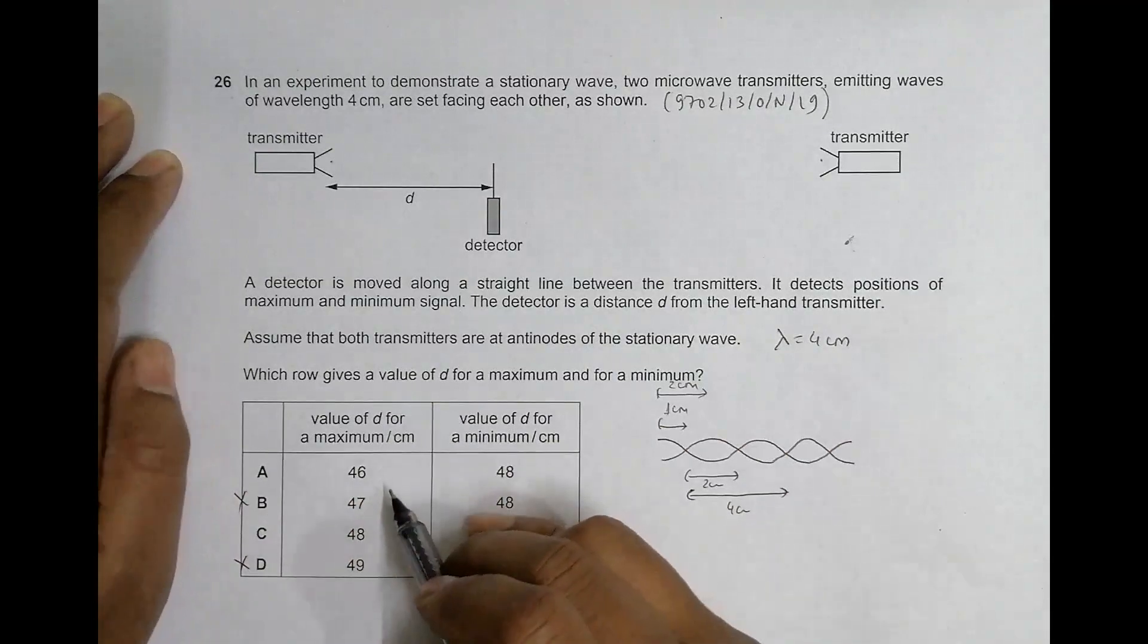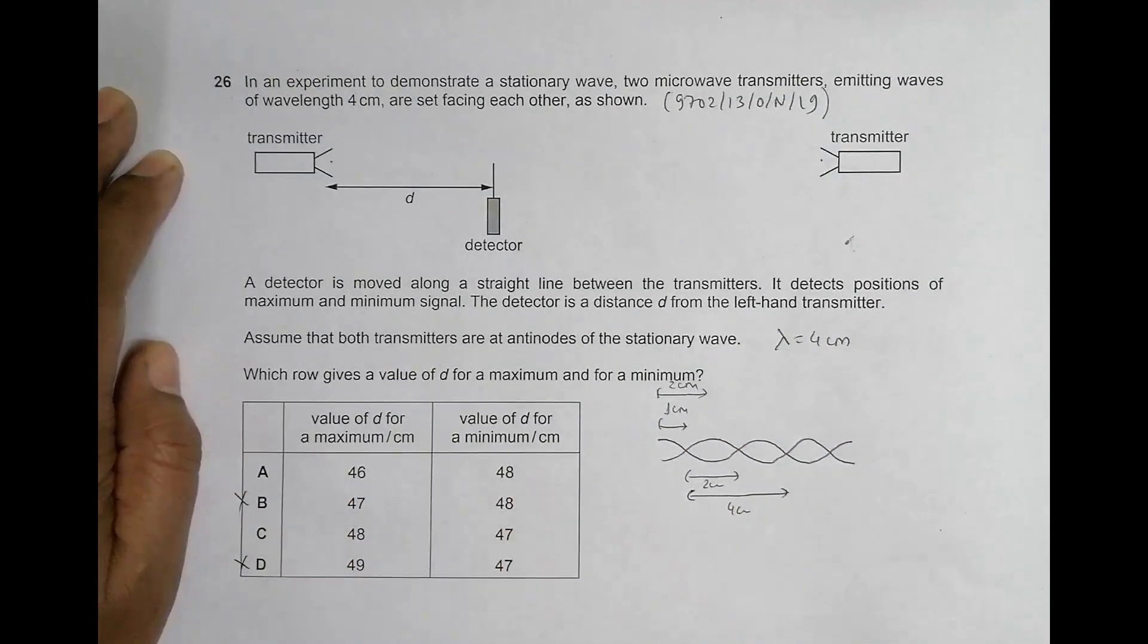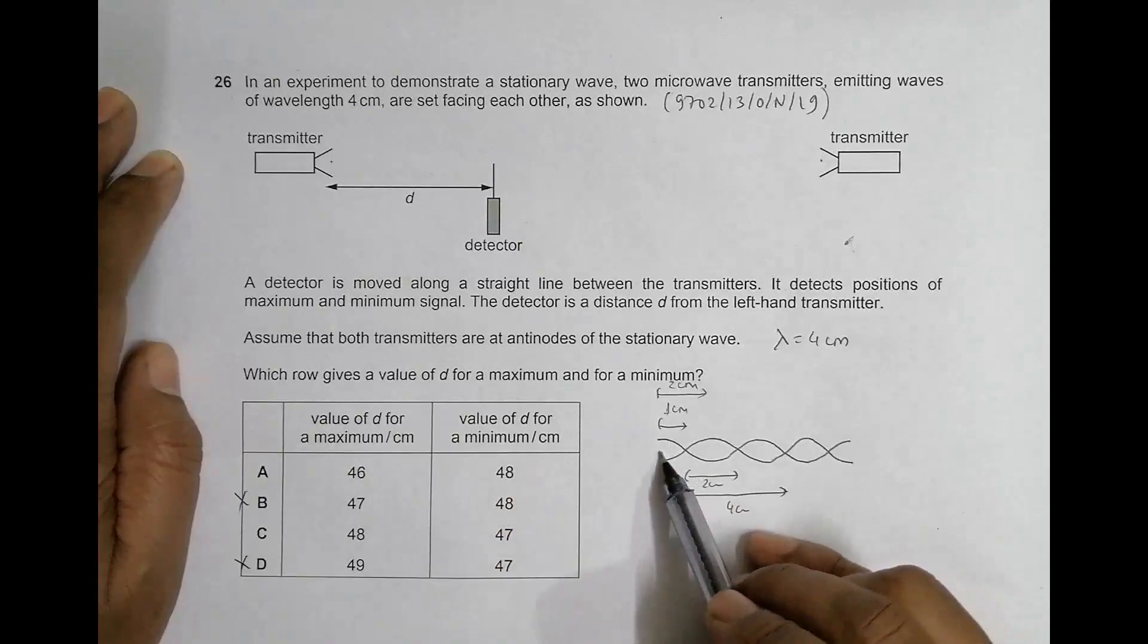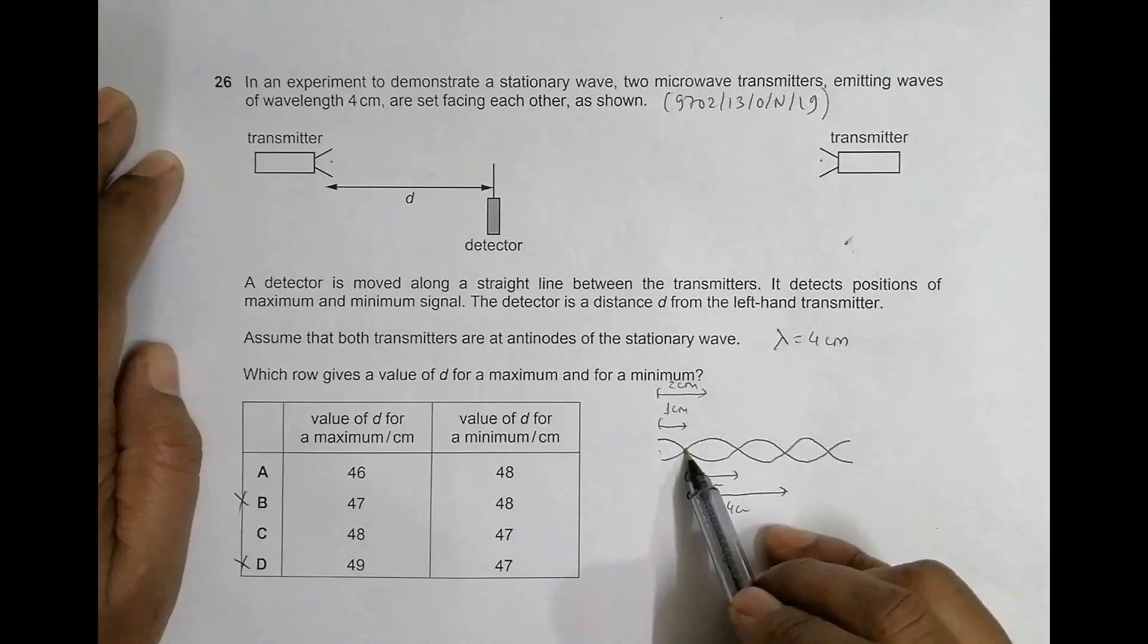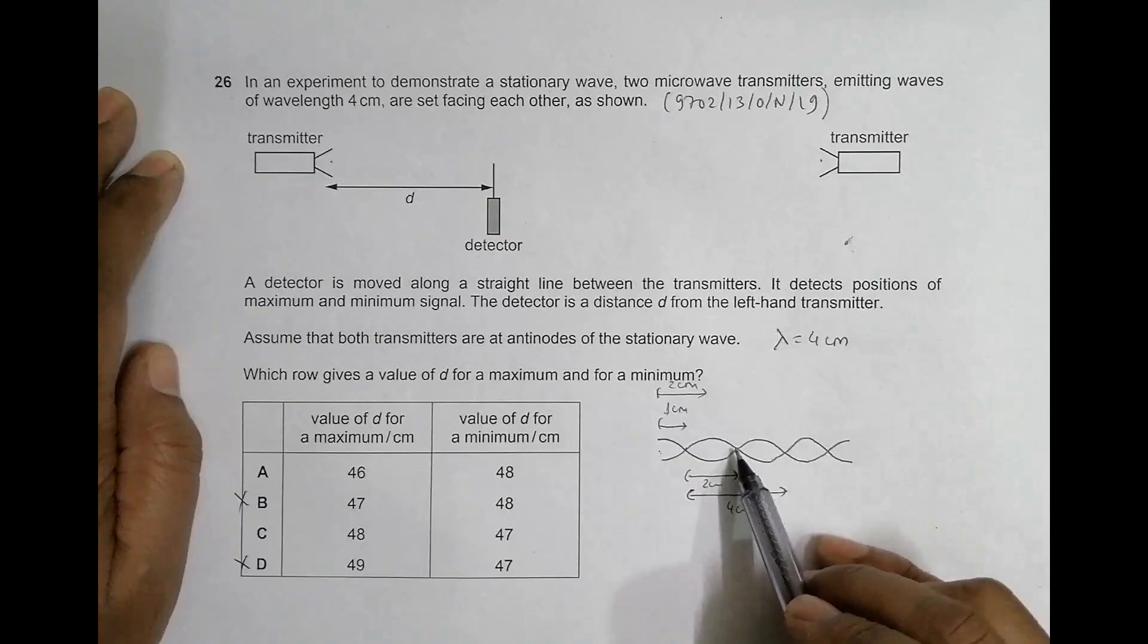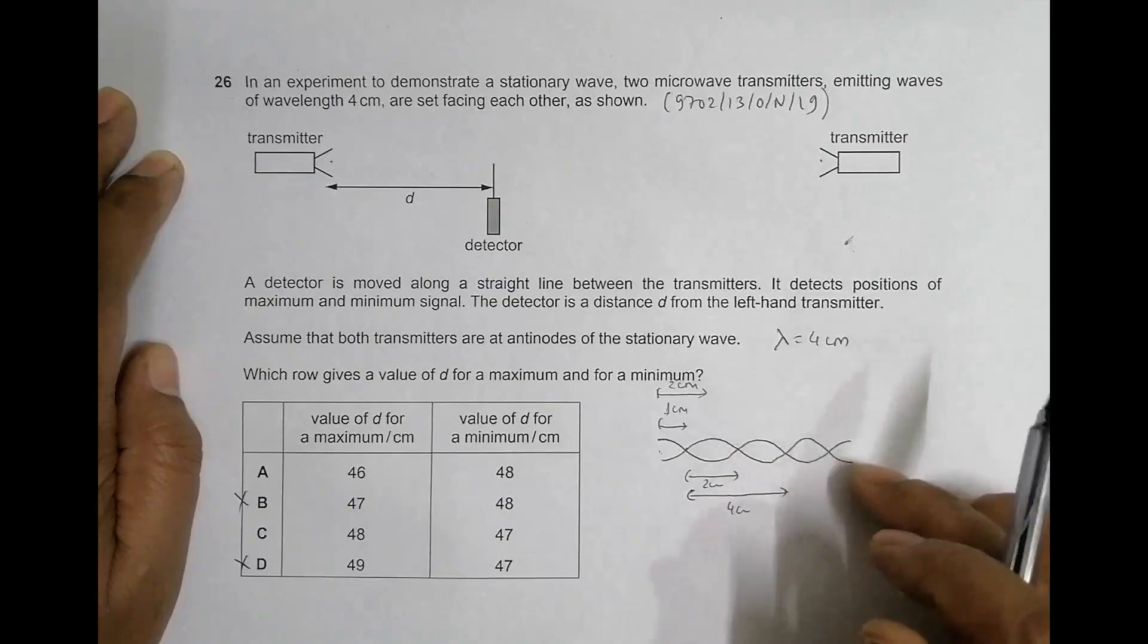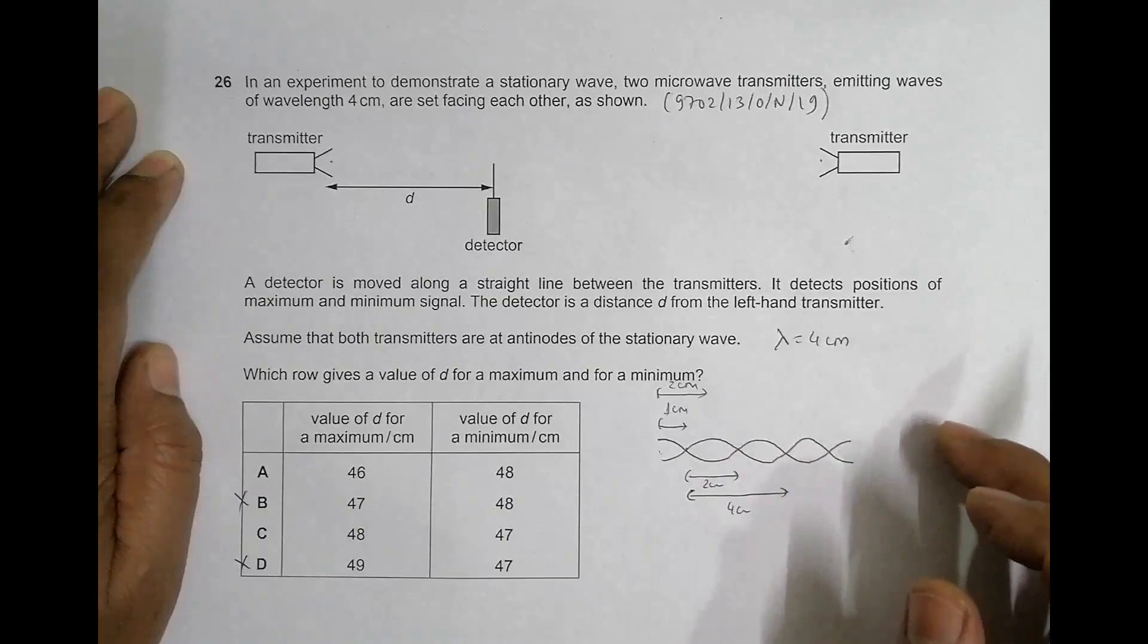Similarly, the minima will be formed at nodes. So minima is formed at 1 centimeter, then we have 3 centimeters, then we have 5 centimeters, 7 and so on. So minima will be formed at odd number of centimeters.